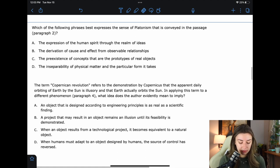B, the derivation of cause and effect from observable relationships. I'm not really sure what relationship we'd be talking about here or cause and effect. I just want to find a better answer. C, the pre-existence of concepts that are the prototypes of real objects. Yeah, I like that. Kind of what I was saying. Pre-existence of concepts. Everything exists. We really just have to discover it. And that are the prototypes of real objects. That would be the engine. It's a real object. And the concept that's the prototype of that real object is already in existence. So I like that. But always read all your answer choices. D says, the inseparability of physical matter and the particular form it takes. We're talking about concepts here. The inseparability of concepts and physical matter. Not necessarily physical matter and a particular form.